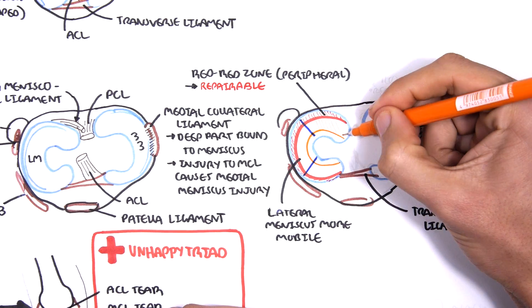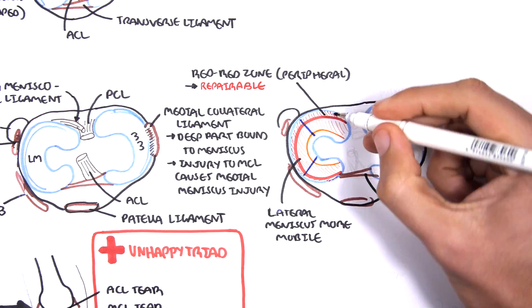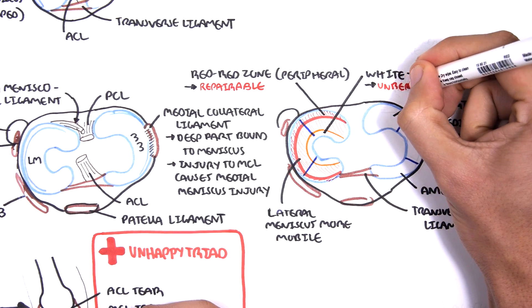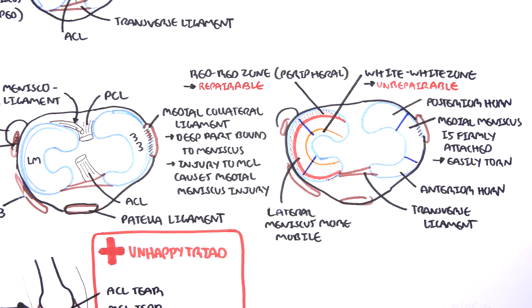The inner third is the white-white zone. This is an avascular zone. There is no blood supply, and so it is unrepairable if damaged.